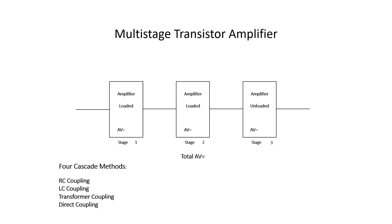Let's move on to our next topic: multi-stage transistor amplifiers. Multi-stage transistor amplifiers are used when the gain of one stage or one transistor amplifier is not practical, so we need to increase the voltage gain by connecting each stage together. This is a process called cascading, and there are four methods we talked about in class today: RC coupling, which we go into in large detail, LC coupling, transformer coupling, and direct coupling, which we don't go over much in class.